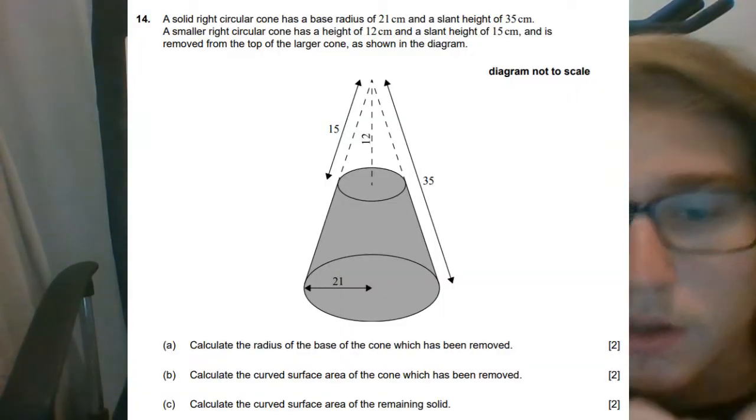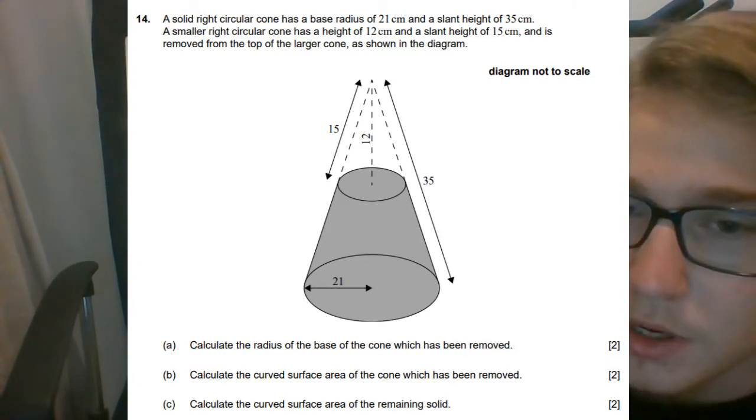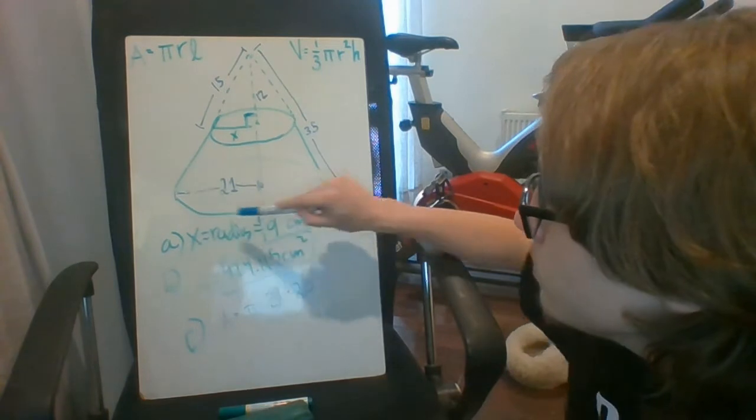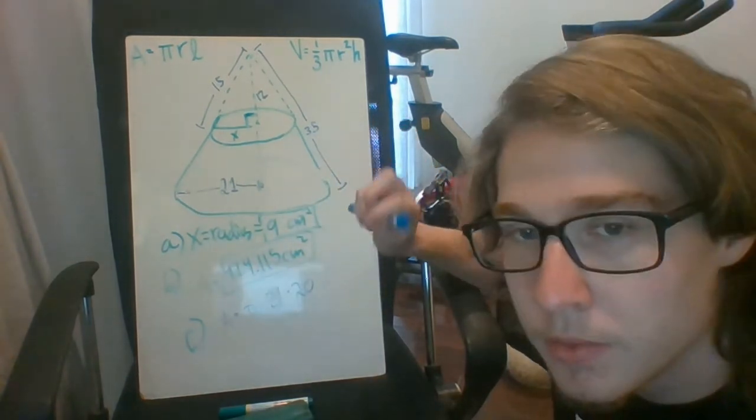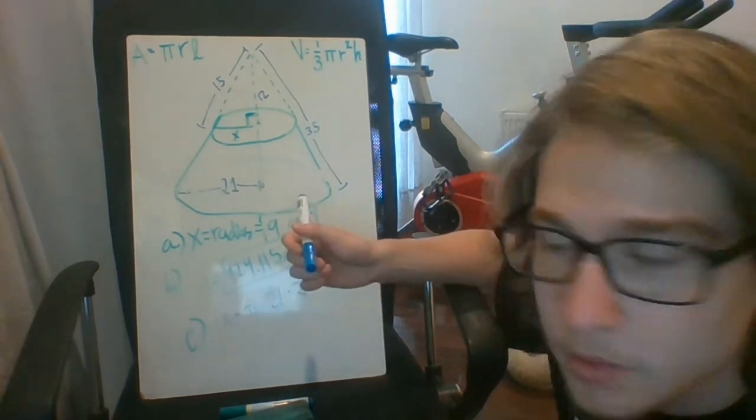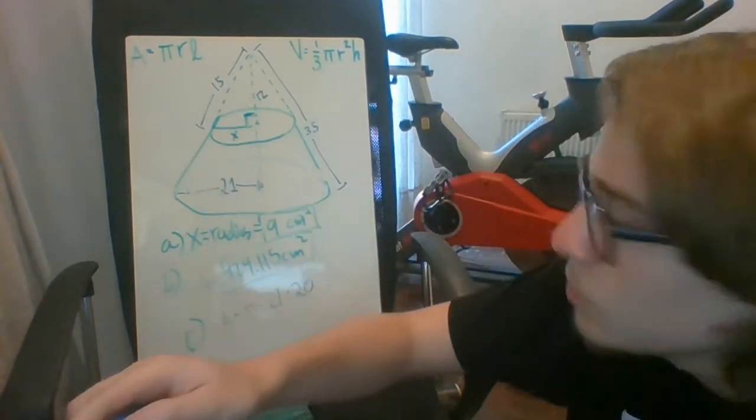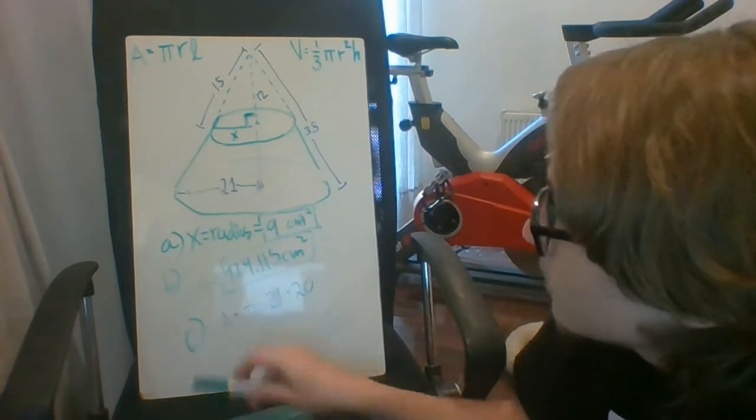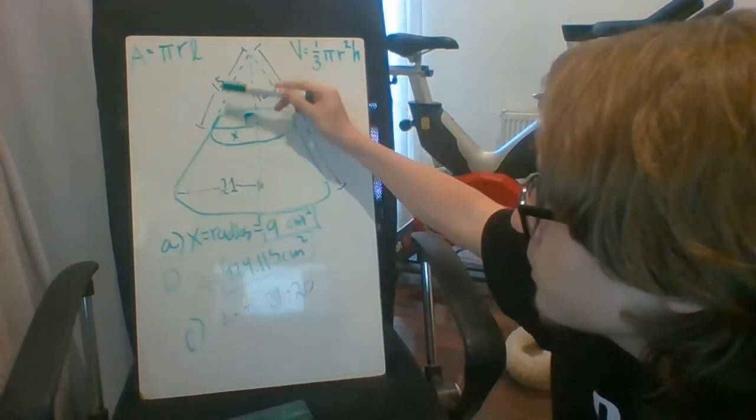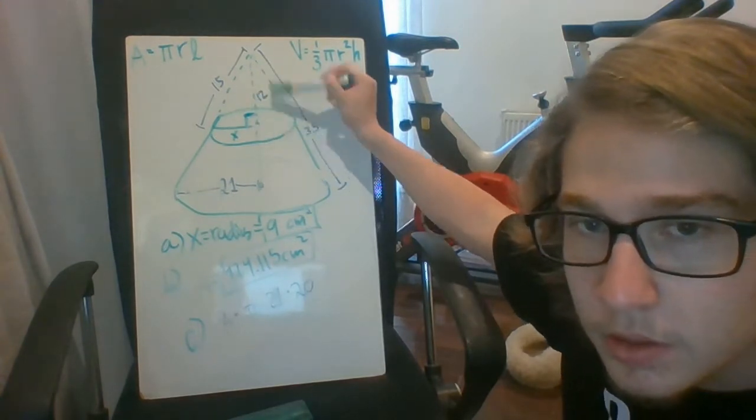For part C, we have to calculate the curved surface area of the remaining solid. Now this is a little bit more tricky because the cone on the bottom has been cut off, so you can't calculate the surface area of this in a direct manner. You have to calculate the whole cone and then subtract the top part.